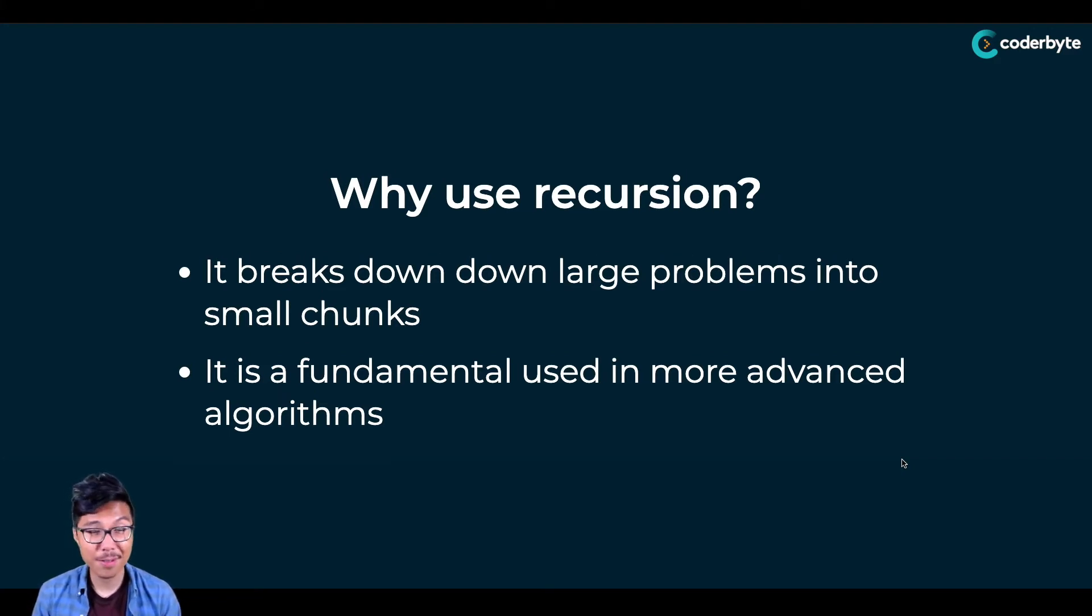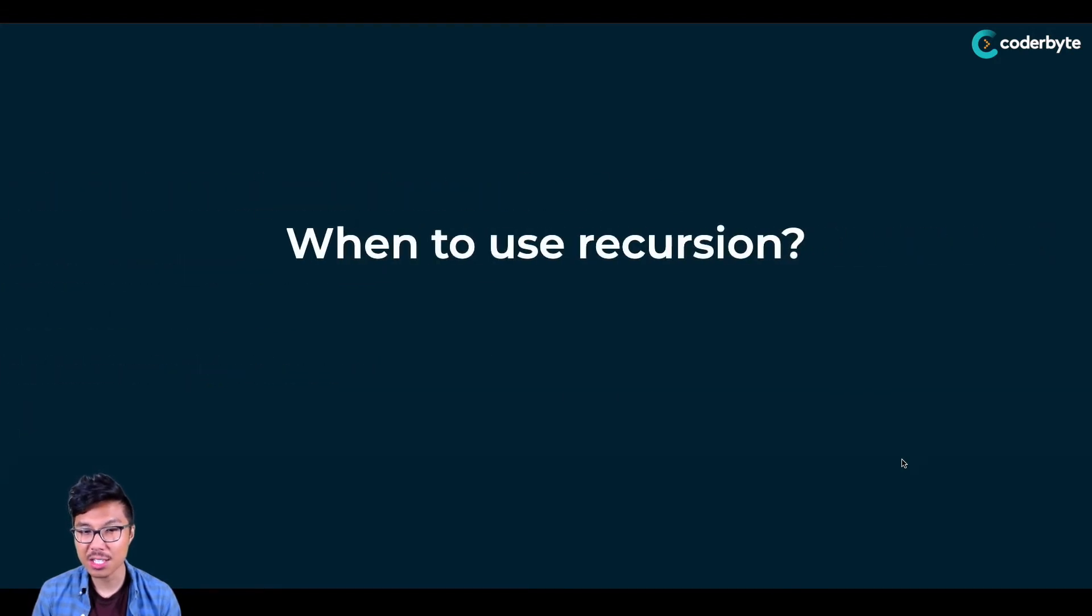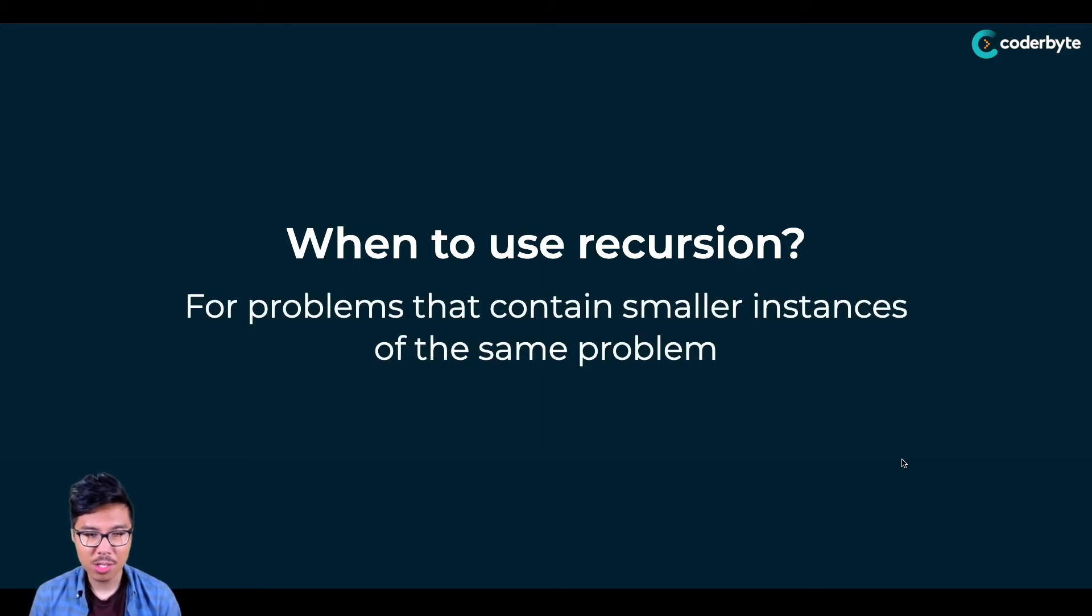So that leads us into our first question: when should we actually use recursion? Recursion is a very potent strategy, but we want to use it only under very specific circumstances. You want to use recursion for problems that follow a particular pattern. In general, you want to use it for problems that contain smaller instances of the same problem inside. This is actually a very common scenario in the context of programming.